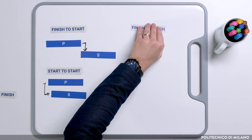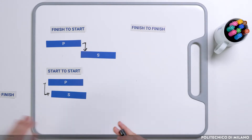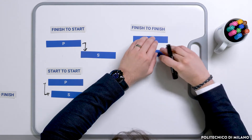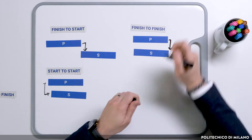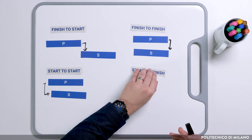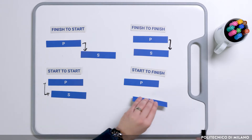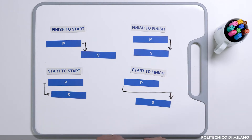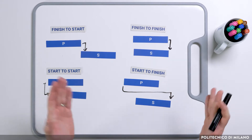Finish to finish: the predecessor must finish before the successor can finish. For example, laying asphalt must be completed before line painting can be completed. And finally, start to finish: the predecessor must start before the successor can finish. For example, road excavating must start before line painting can be completed.